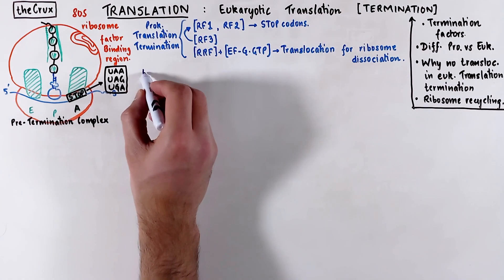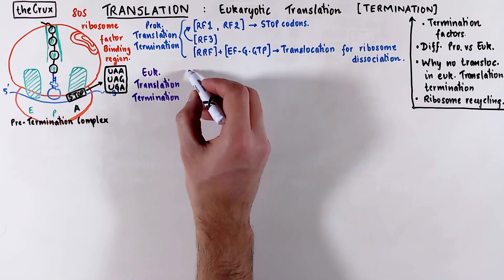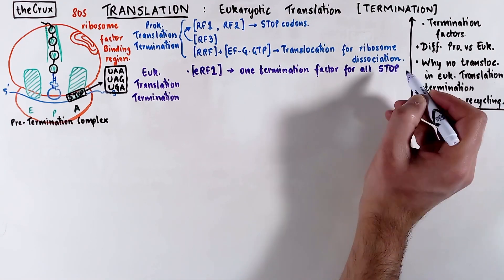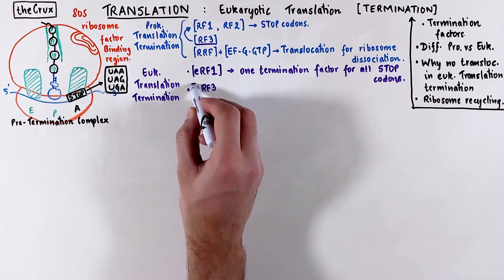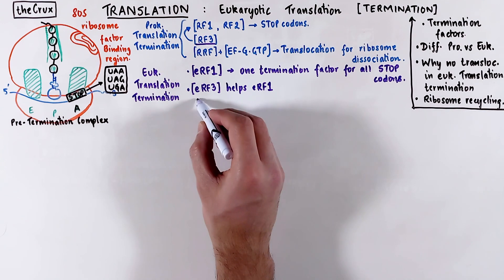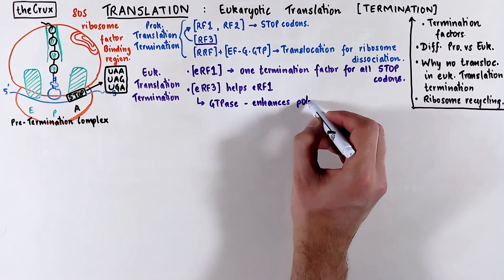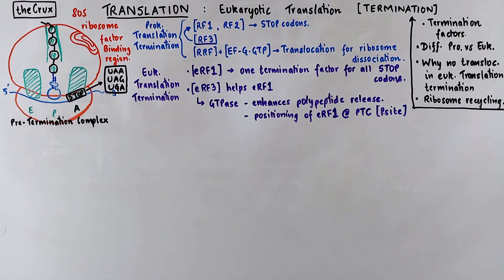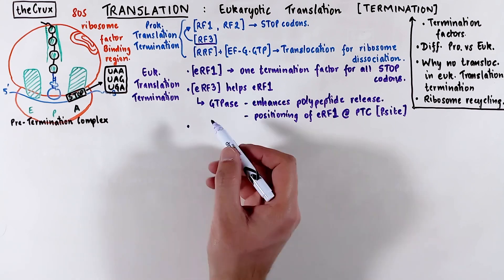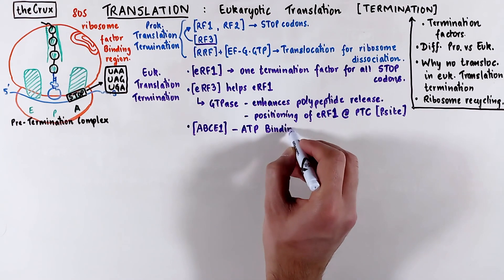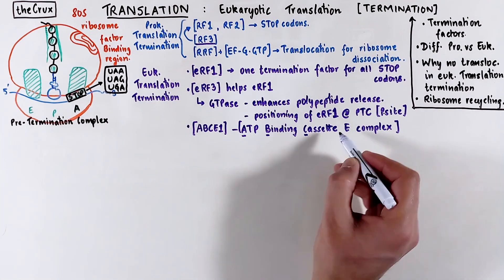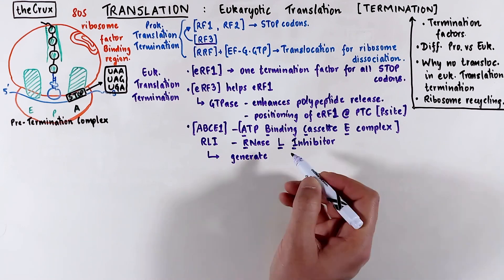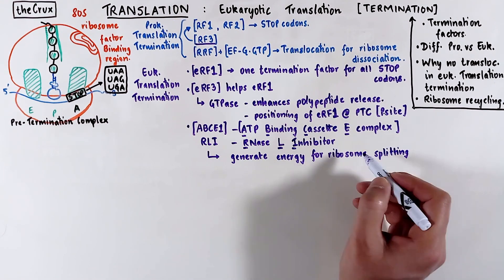In eukaryotes, we have one release factor called ERF1, and this factor alone recognizes all three stop codons. Similar to prokaryotes where RF3 helps the class 1 factors, the eukaryotic RF3 also helps RF1, and this RF3 is also a GTPase. RF3 helps in the polypeptide release and the positioning of release factor 1 at the peptidyl transferase reaction center at the P site. Then finally, we have a protein complex named ABCE1, which stands for ATP binding cassette E complex 1. The ABCE1 generates energy for the ATS ribosome splitting, and this happens when ABCE1 interacts with ERF1.